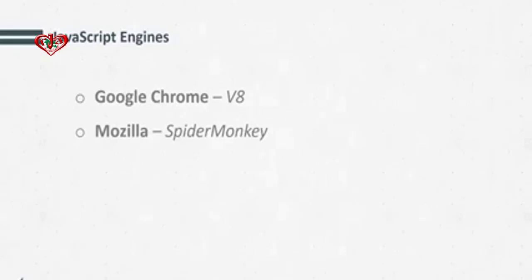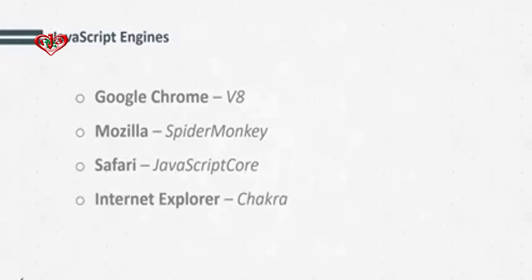JavaScript runs through a JavaScript engine inside the browser. Google Chrome uses a JavaScript engine called V8. Mozilla Firefox uses SpiderMonkey, Safari uses JavaScriptCore, and Internet Explorer uses Chakra. Now let's start the learning process.